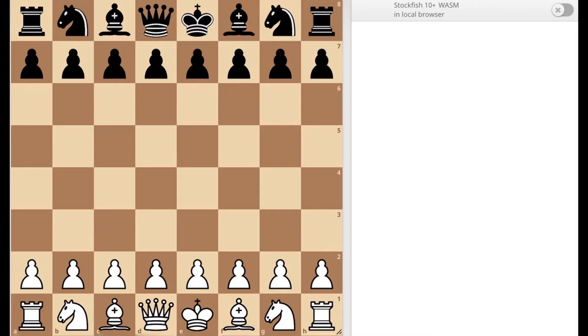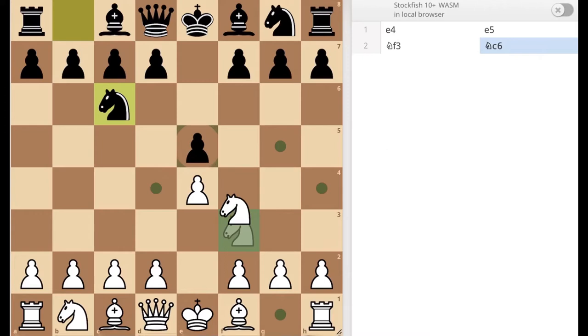So it starts off normally: e4, e5, knight f3 that attacks this pawn over here. Then usually he responds with knight c6 which defends that pawn there. So now instead of going into a usual line like bishop c4 or bishop b5, we go for a rather strange move at first but it has a lot of theory into it: c3, which anticipates the move d4 gaining the center and having advantage in the middle game.